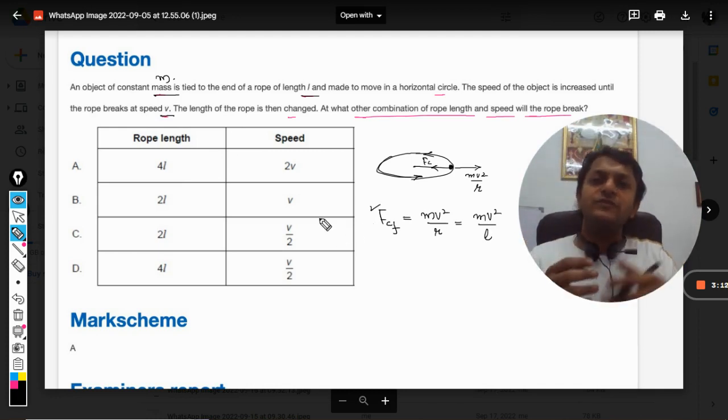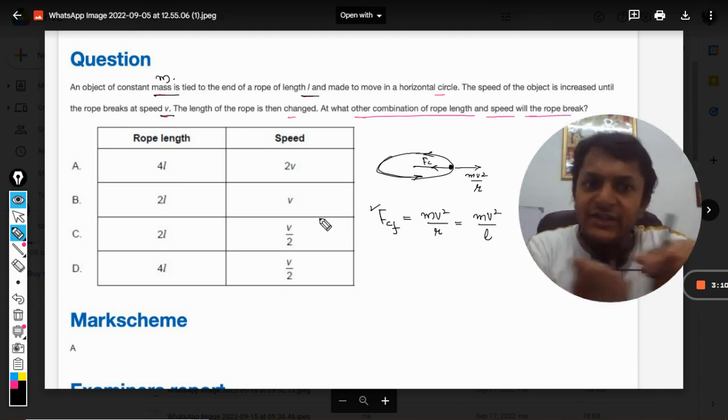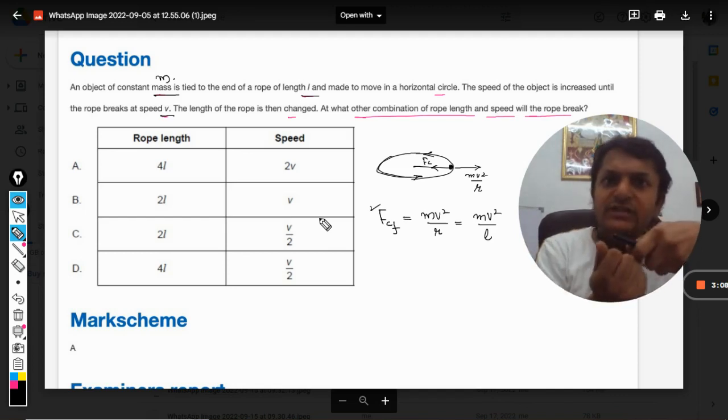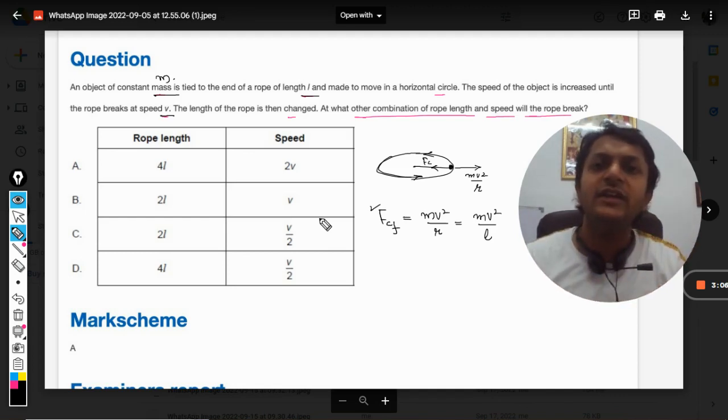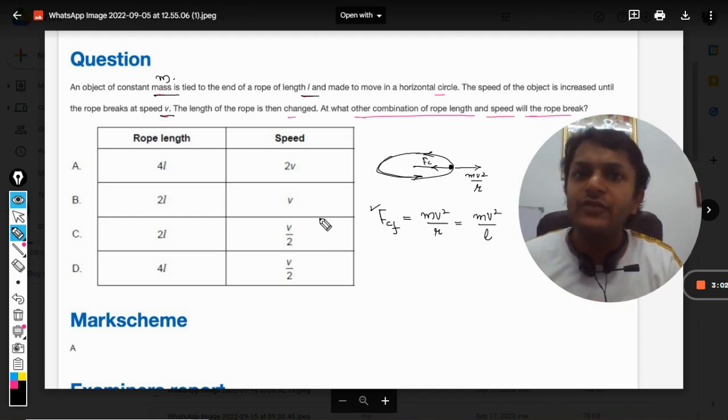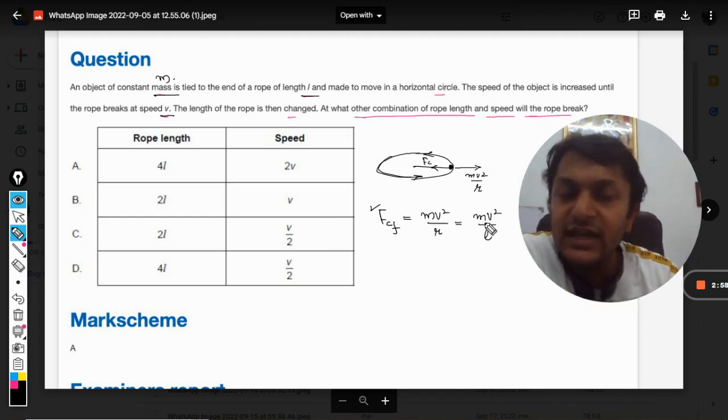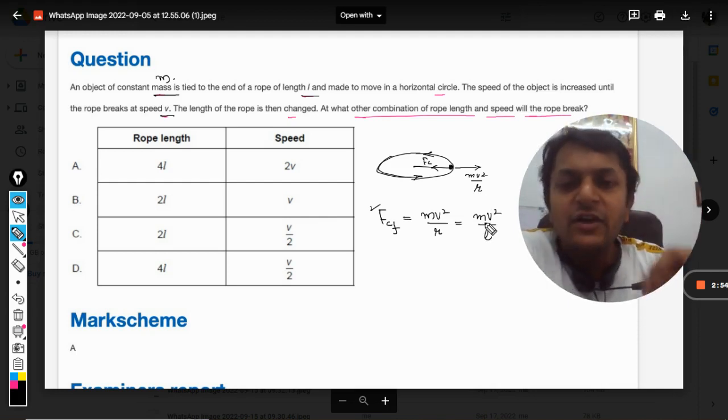It means this much centrifugal force, which is giving tension to the string and pulling the body outside, is equal to the breaking strength of the string. So if the centrifugal force is equal to this, the string breaks. From this we can find the breaking strength of the rope.